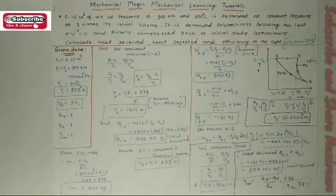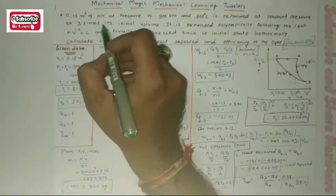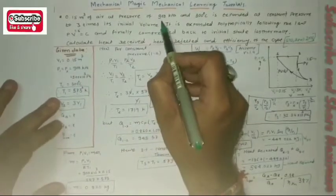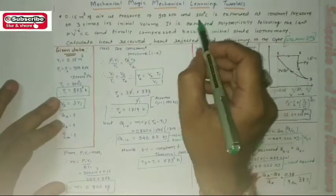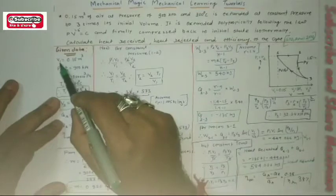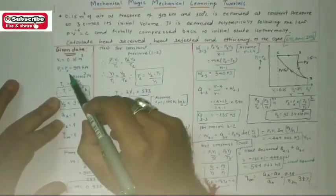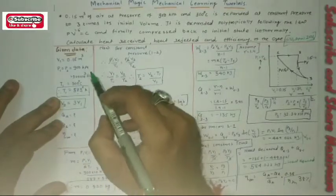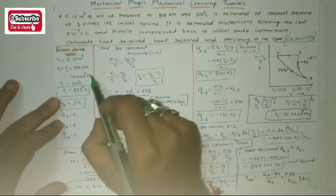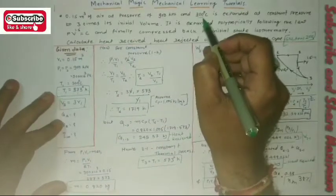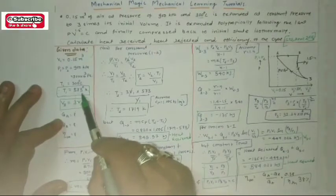According to the data, 0.15 cubic meters of air at a pressure of 900 kilo Pascals and temperature 300 degrees centigrade. This will be the point 1 conditions: V1, P1. For the constant pressure process, P1 equals P2 equals 900 kilo Pascals, which is 900 × 10³ Pascals. Temperature T1 is 300°C, converting to Kelvin: T1 = 573 K.